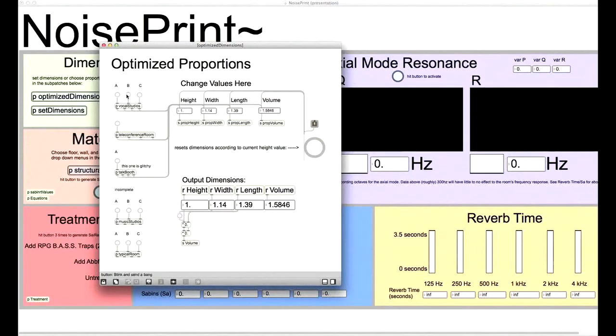In the new patch window, there are three proportions for a vocal recording studio, one proportion for a teleconference room, and one for a radio-style talk booth. I'll choose Vocal Studio C. The corresponding proportions generate for height, width, length, and volume. I'll change height to 15 feet. When I enter the new value, the other dimensions adjust accordingly.